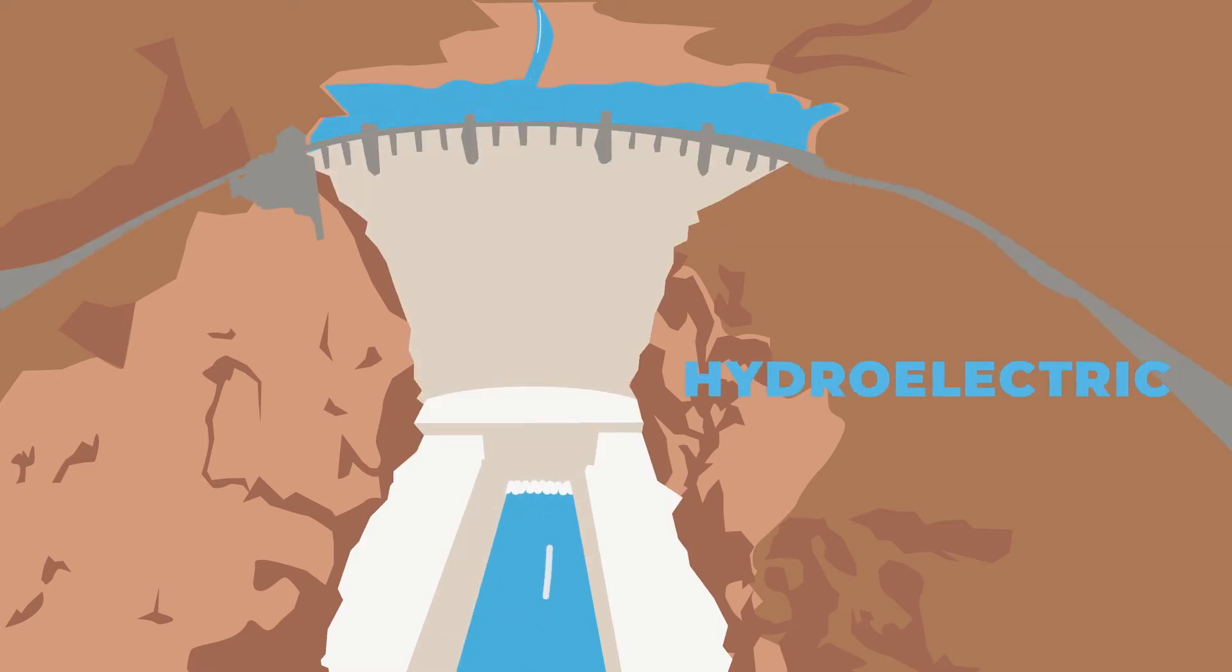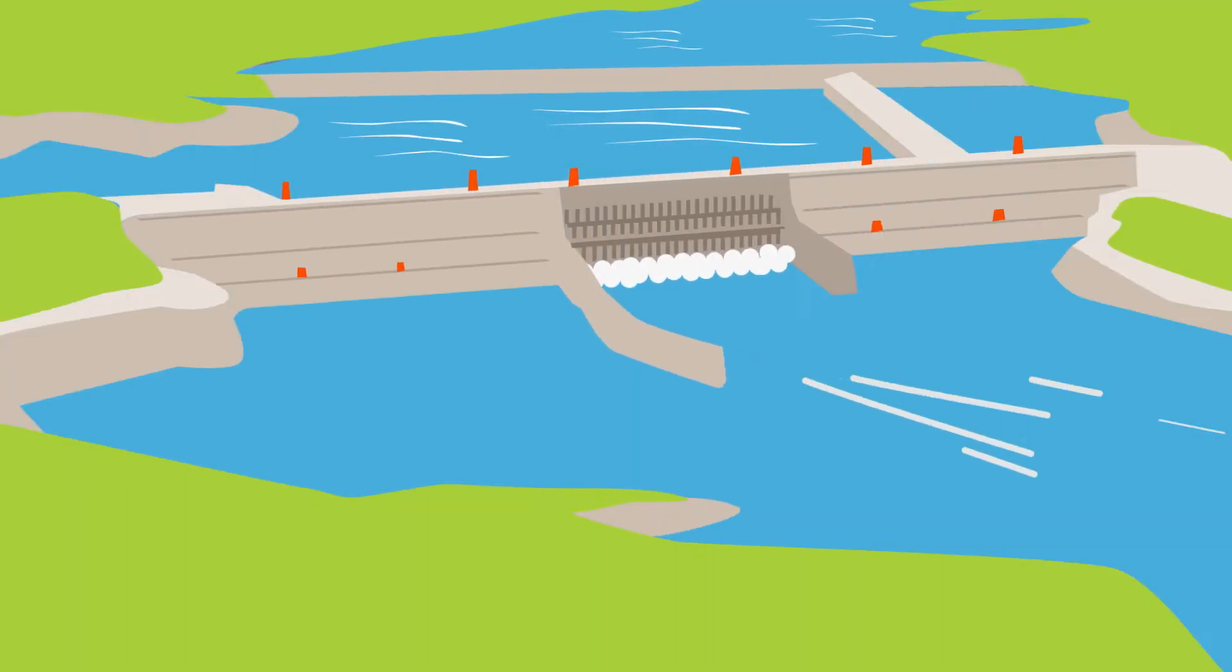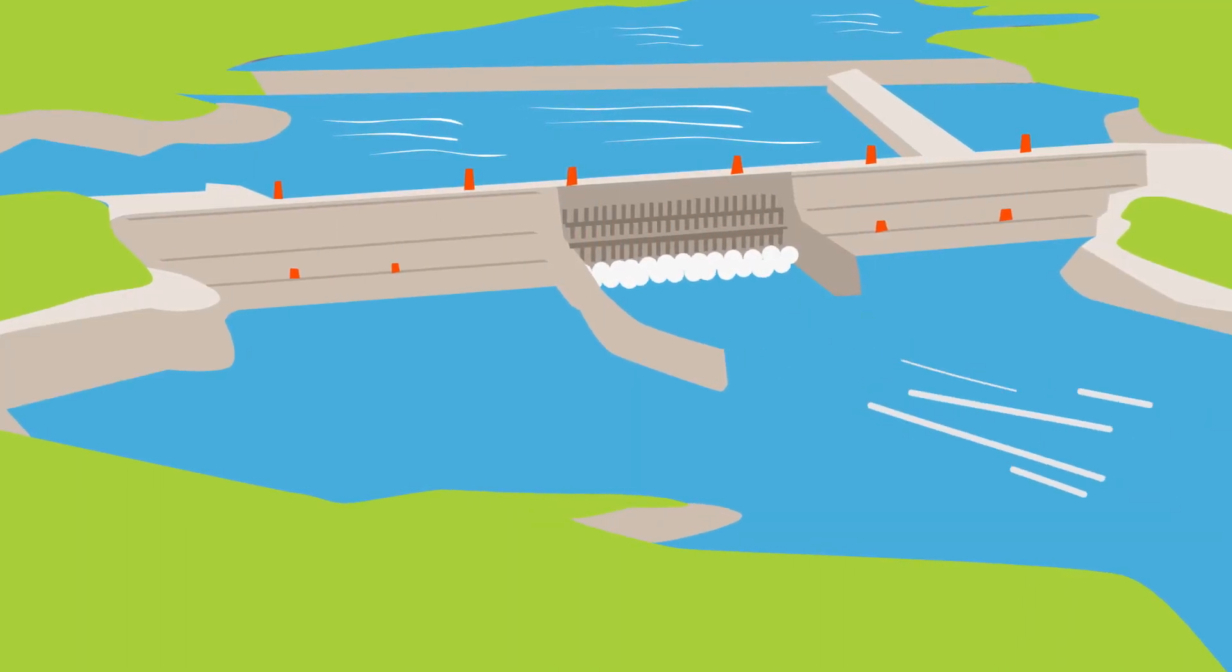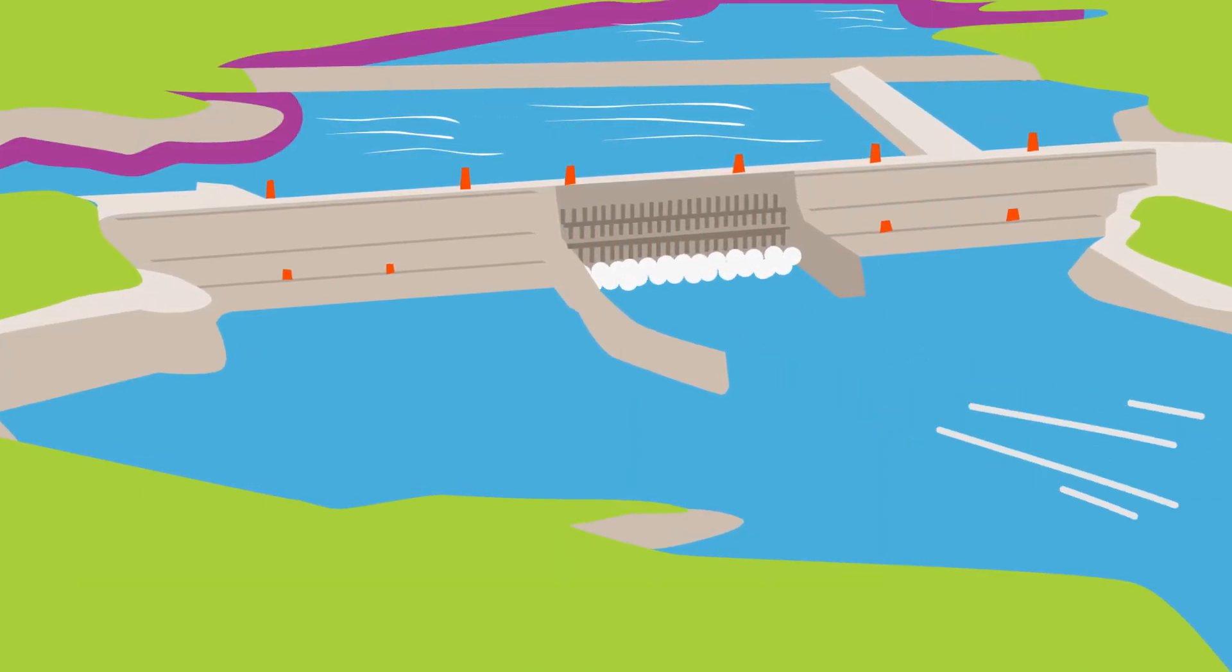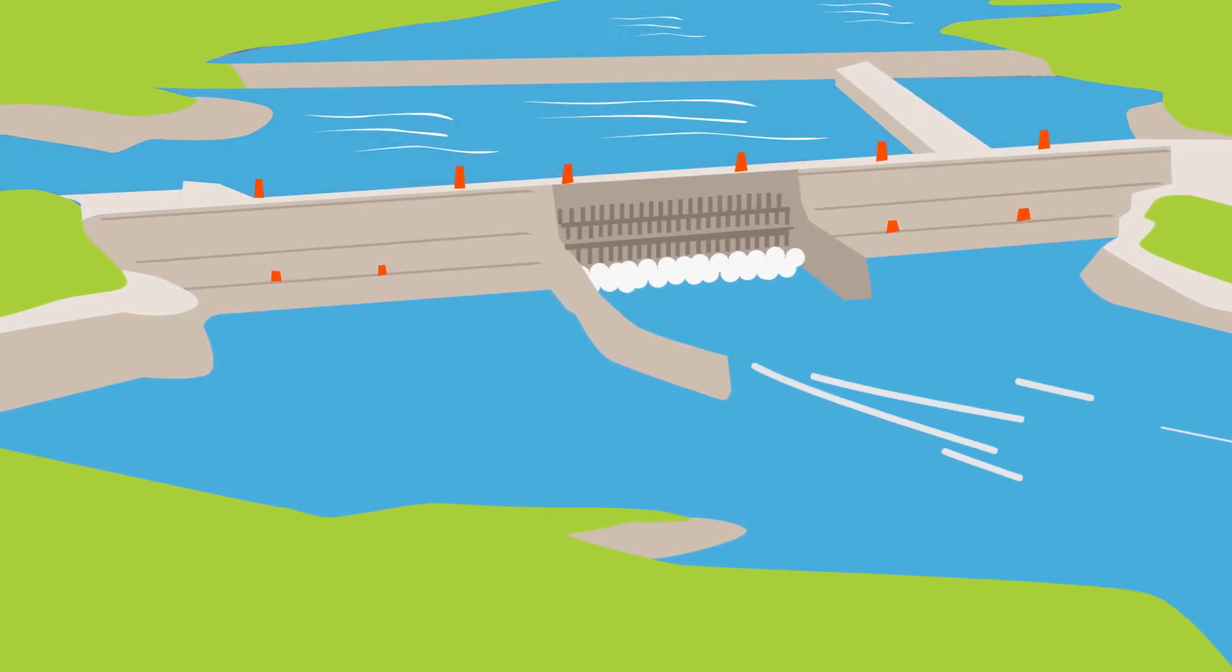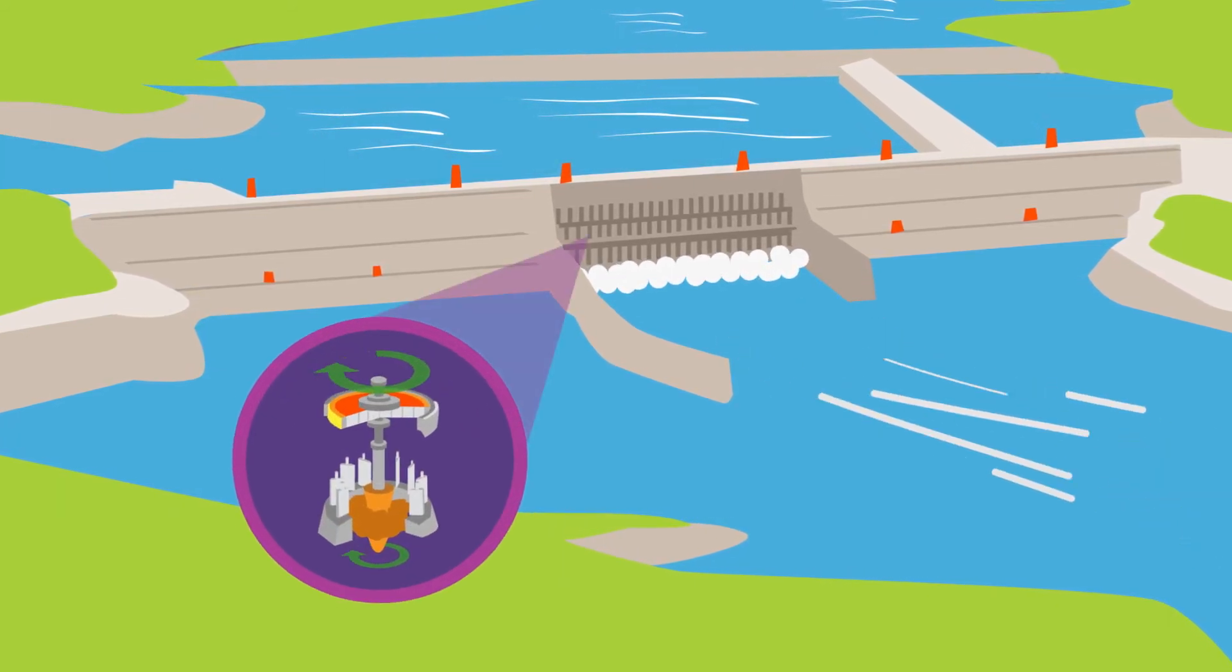Like the Hoover Dam in the United States, or the Three Gorges Dam in China. Hydroelectric dams create artificial lakes and control the flow of water to spin turbines.